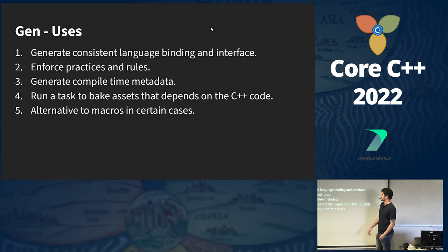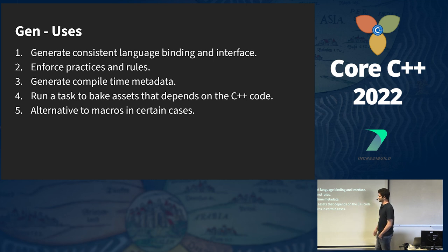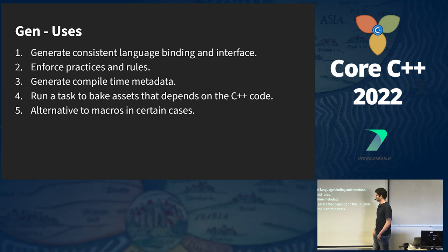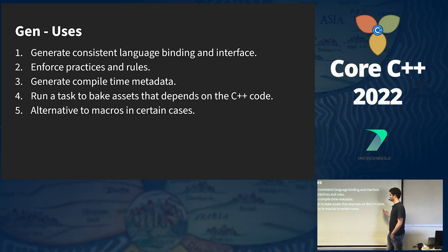Some possible use cases: if you are working with C++ and other languages, you usually need to write language bindings or an interface — now you can generate them during compilation so that if you change your C++ code, the binding code is regenerated automatically. You can enforce coding practices and rules — for example, generate everything as const by default or force all standard functions to start with a capital letter. You can generate compile-time metadata to implement features such as reflection. And since we have arbitrary code execution, you can run tasks to bake assets that depend on the C++ code — for example, compile GLSL into SPIR-V. It can also be an alternative to macros in certain cases.